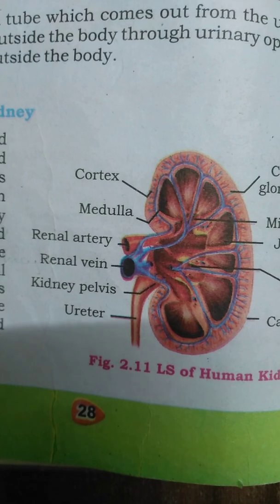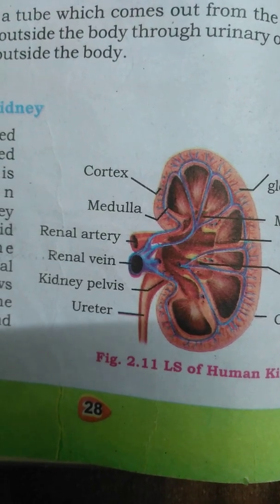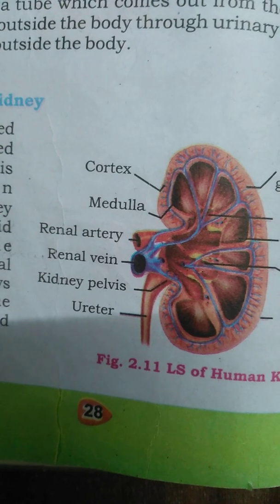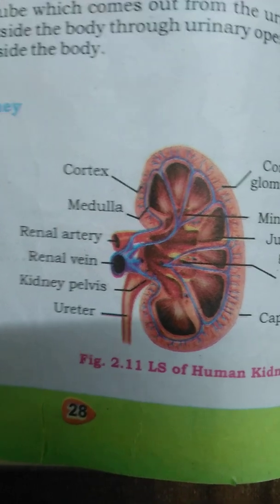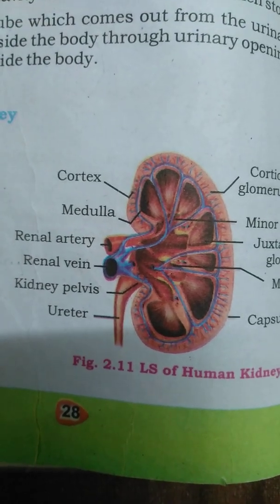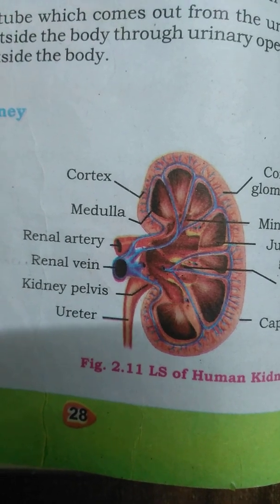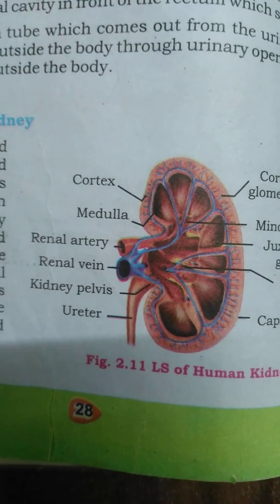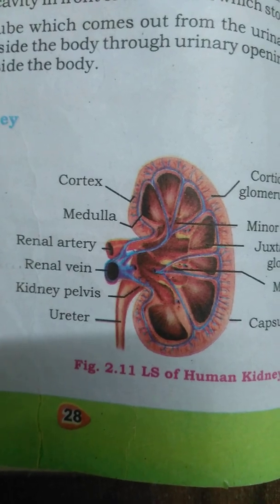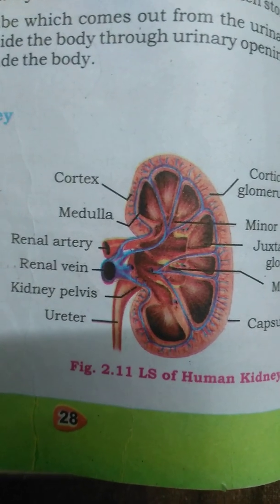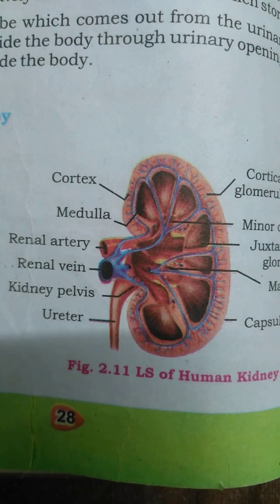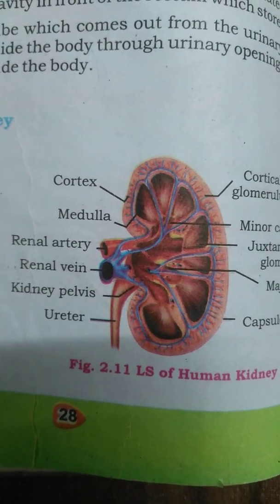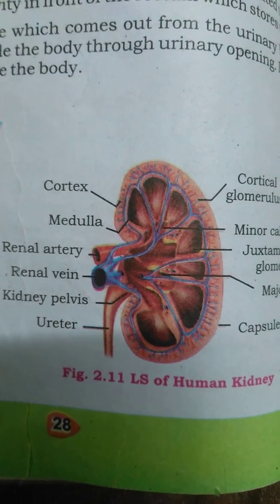The renal pyramids are conical projections, numbering about 12 to 16 in the human kidney. More than one million microscopic nephrons are present in the medulla, which perform the process of osmoregulation to produce urine.